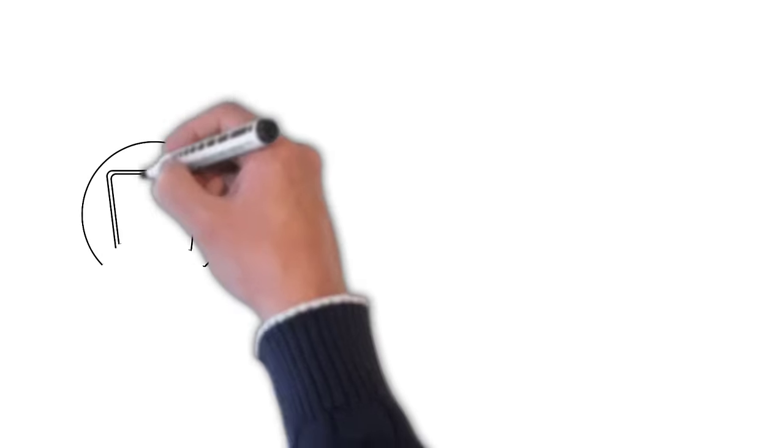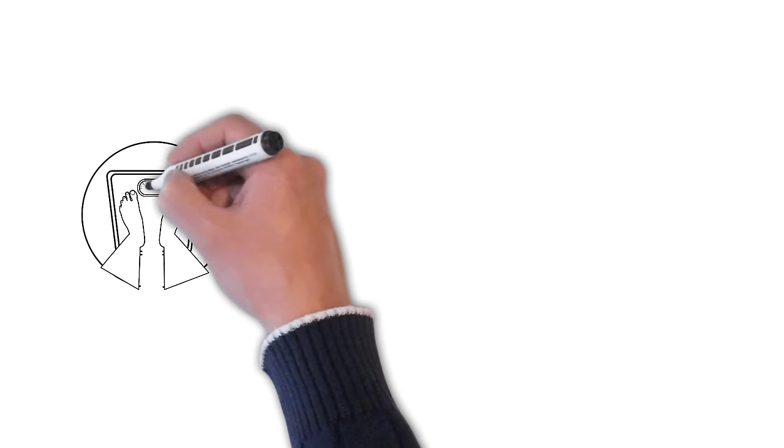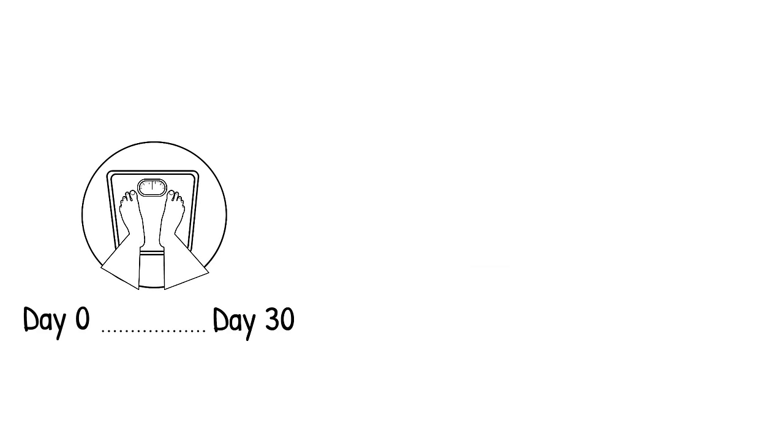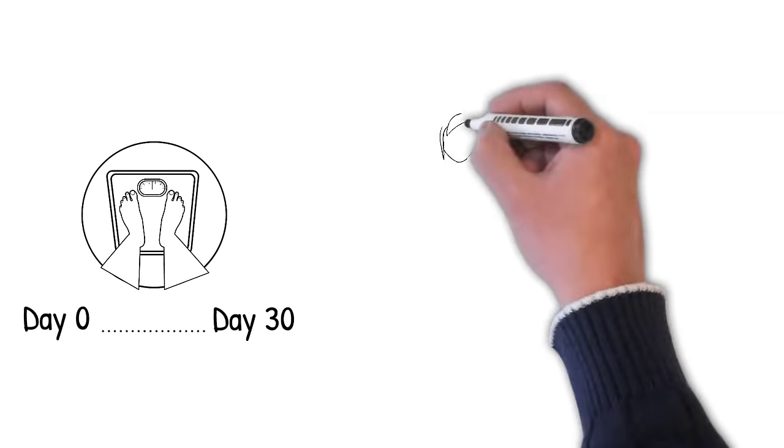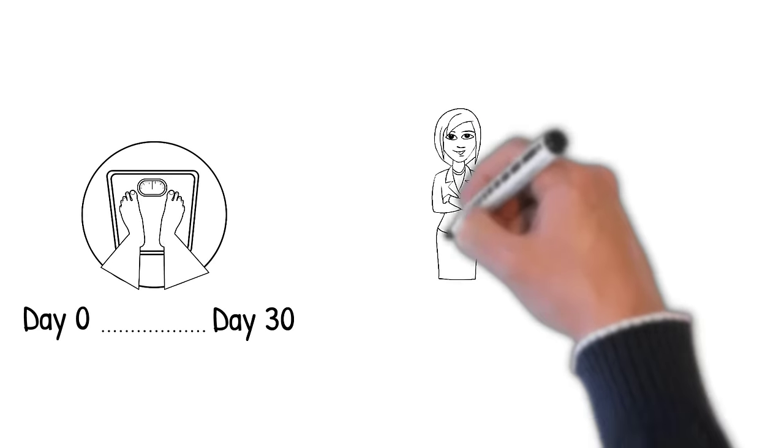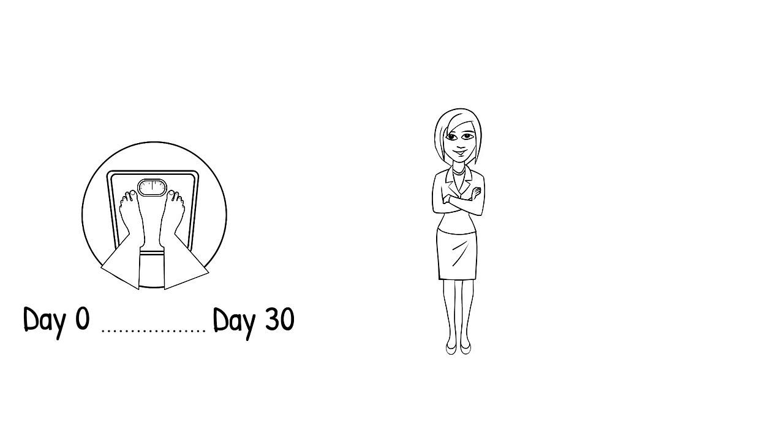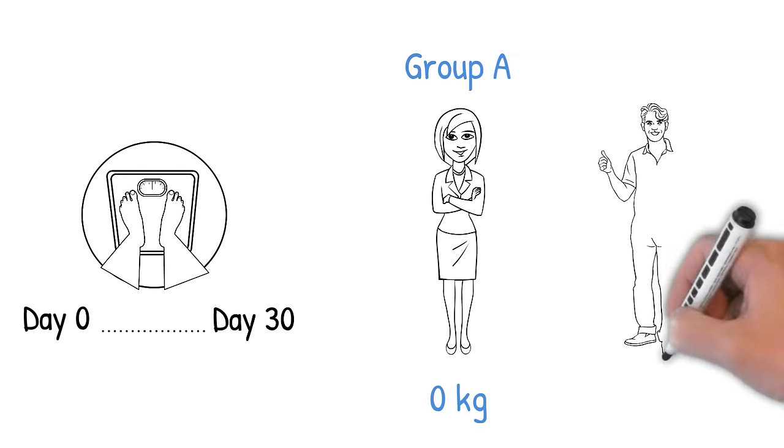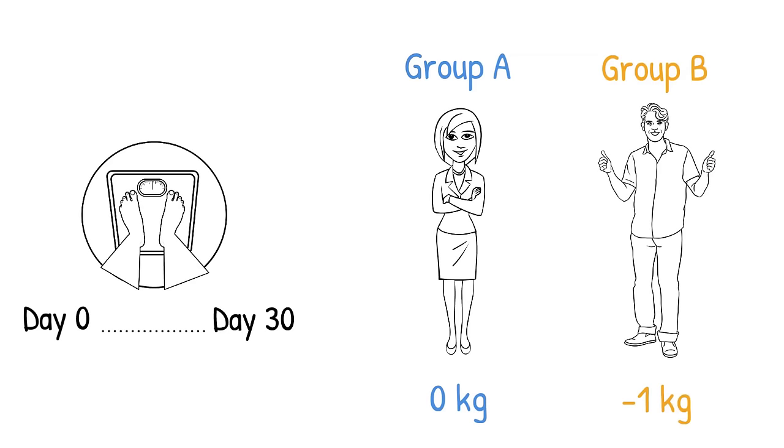The participants are weighed at the start of the study and at the end of the study, and this way you can work out the body weight difference. At the end of the study, you work out that group A's average body weight difference was 0 kg. In other words, they did not gain or lose any body weight. Group B on average lost 1 kg of their body weight.